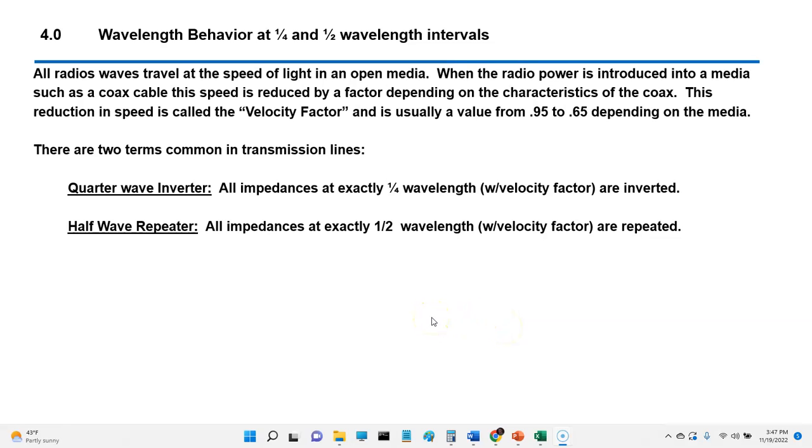For example, on a half-wave antenna, 28.4 MHz, 10.5 meters is one wavelength, and then 5.28 is a half wavelength. All radio waves travel at the speed of light in an open media. When the radio power is introduced into a media such as the coax, the speed is reduced by a factor depending on the characteristics of the coax. And this reduction in speed is called a velocity factor and is usually a value from 0.95 to 0.65, depending on the media.